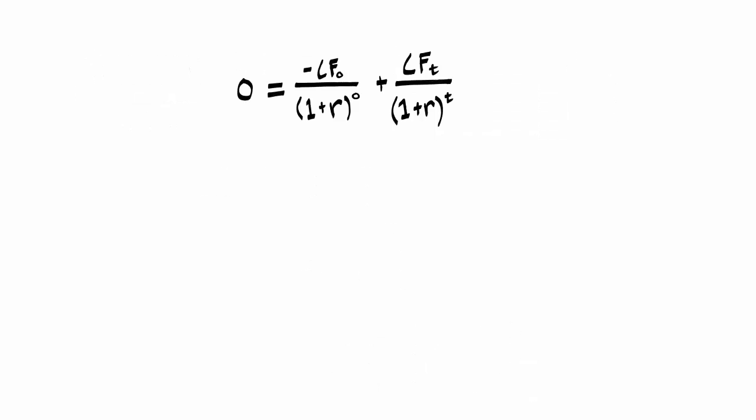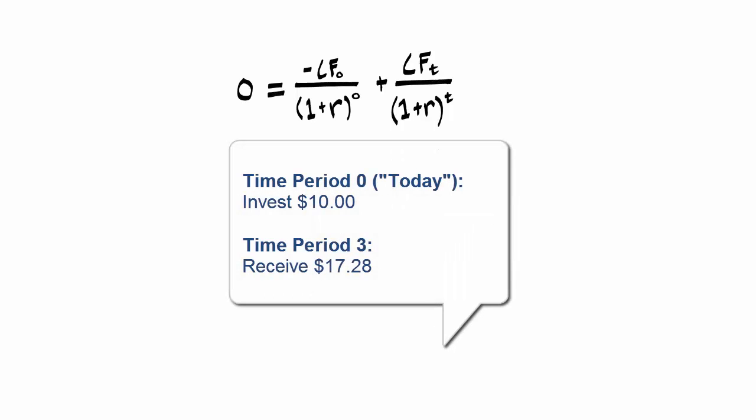As a last step, to make sure it sticks, let's incorporate some values for the variables. Imagine you invested $10 in period zero, which again is another way of saying today, and three years later, received $17.28 in return.